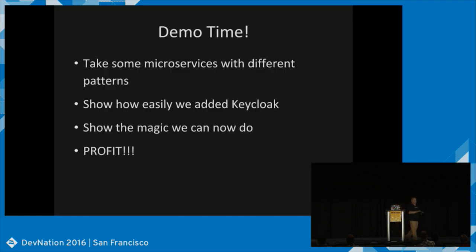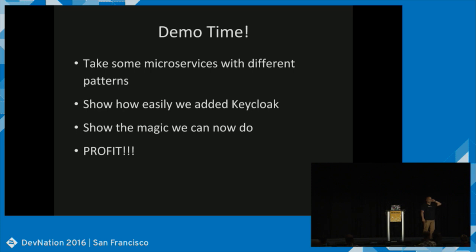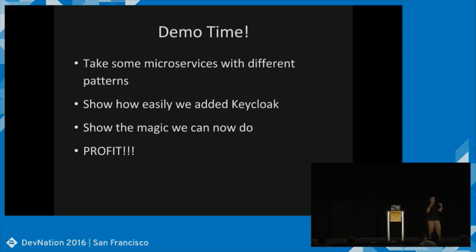Demo time. If you have questions right now, go. The app architecture: we wrote a Dungeons & Dragons random character generator. Players come in through the player console, they authenticate through Keycloak, and a character gets generated. That character is passed on to a MongoDB service running in the background with no front end for users. The service pushes the character into a MongoDB database. There's also an admin role — admins can read from the Mongo service; players can only write.